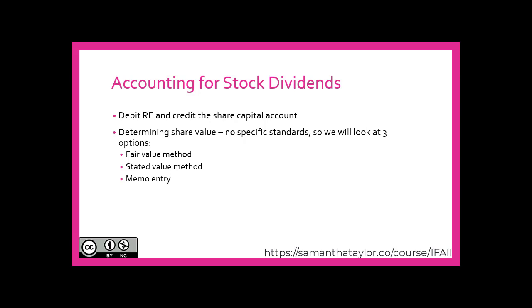The second option is the stated value method: capitalize the stated amount per share as determined by the board of directors, if permissible by the jurisdiction. The third option is a memo entry: if a stock dividend is issued solely to reduce the price per share, shareholders haven't actually received anything of new value, so only a memo entry is recorded. This is equivalent to the treatment of a stock split — a memo entry doesn't debit or credit the statement of financial position but reflects the economic reality that there are more shares outstanding.